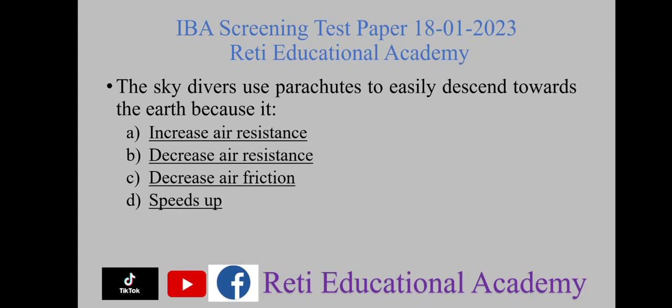Skydivers use parachutes to easily descend towards the earth because it — A) increases air resistance, B) decreases air resistance, C) decreases air friction, D) speeds up. The right option is A) increases air resistance.